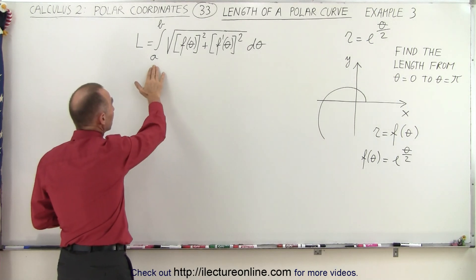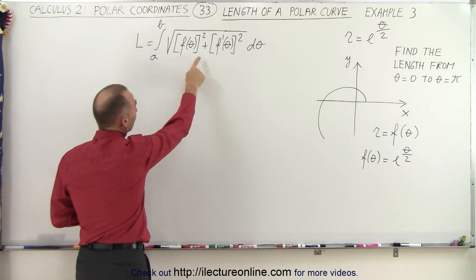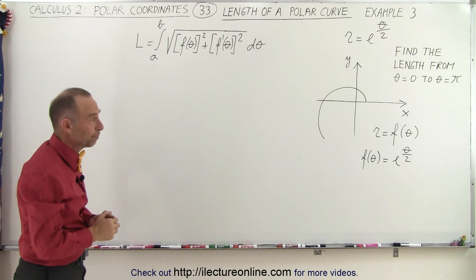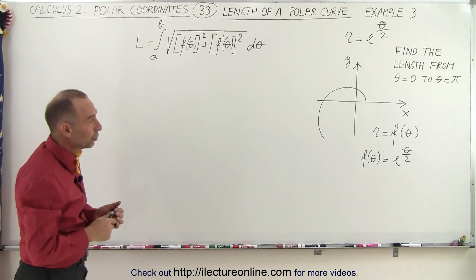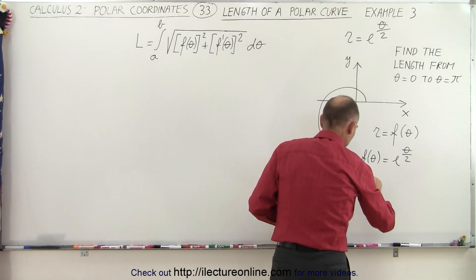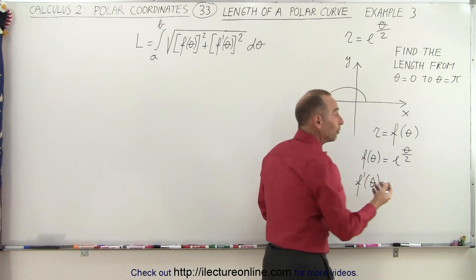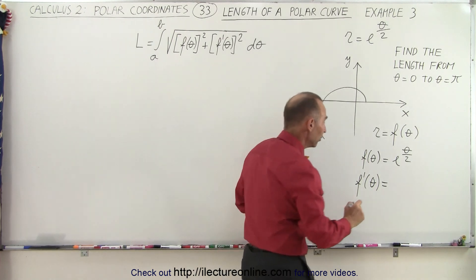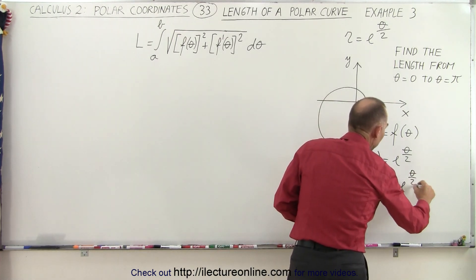The equation is the same: the length is equal to the integral from a to b of the square root of the function squared plus the derivative of the function squared. So the function r equals e to the theta over 2, and the derivative f prime of theta is equal to — well, the derivative of e to the x is e to the x, times the derivative of the exponent, which would be 1 half. So in this case, it would be 1 half e to the theta divided by 2.